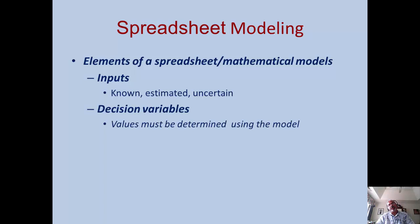The next element in spreadsheet modeling is called decision variables. Decision variables are the variables whose values we are after. We want to determine values for those decision variables. For example, how many units you have to produce of different products that you sell, or how much should be the order size, how many units should you order with your vendor, and things like that.